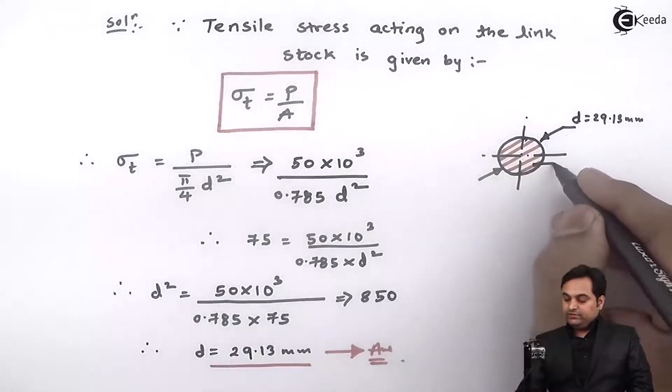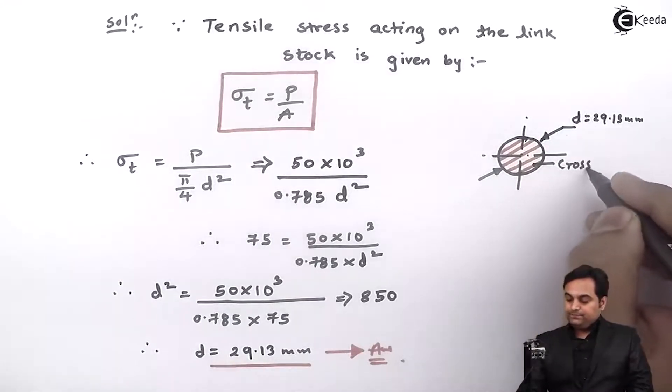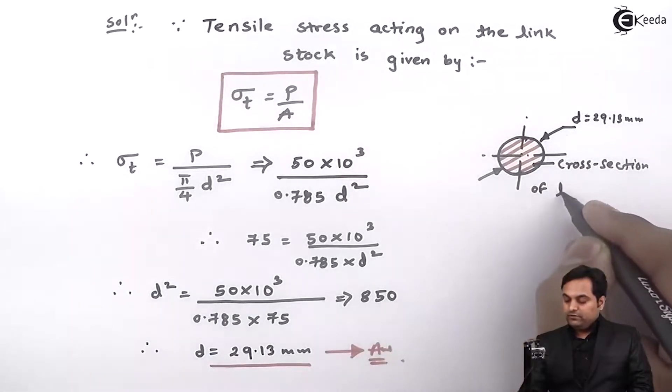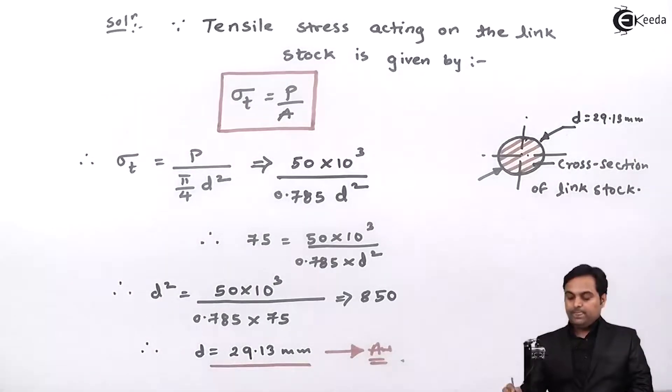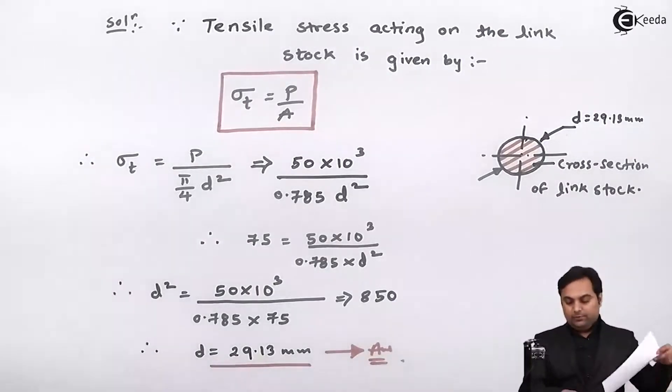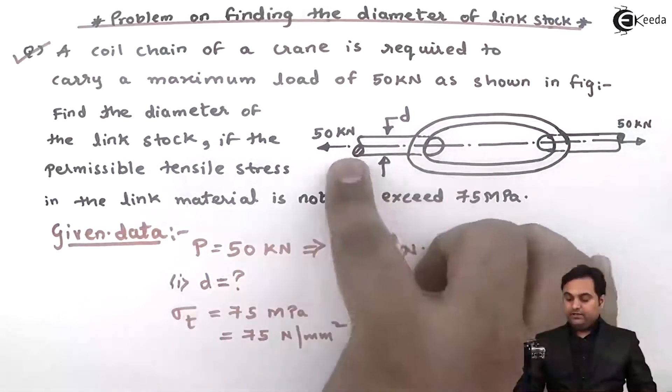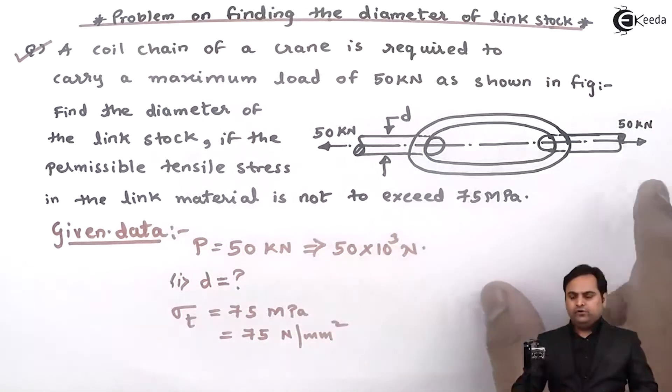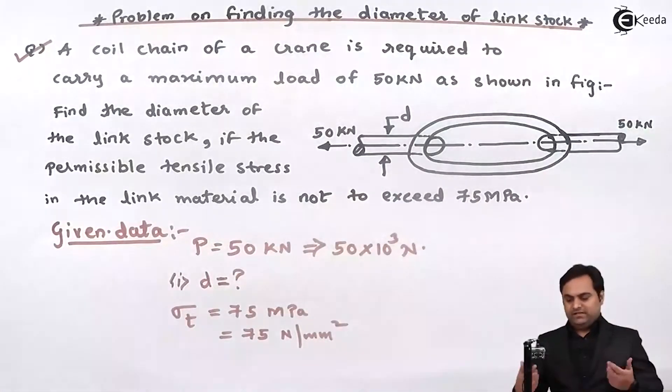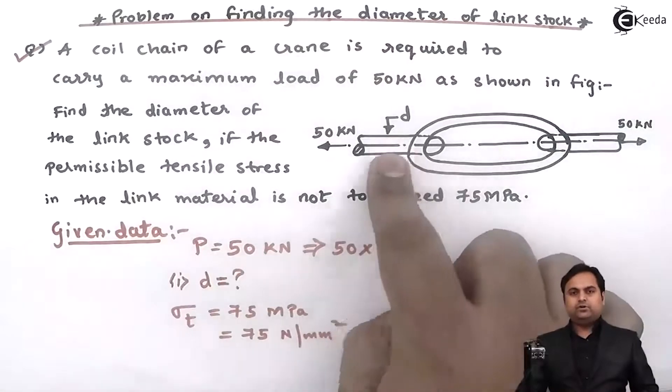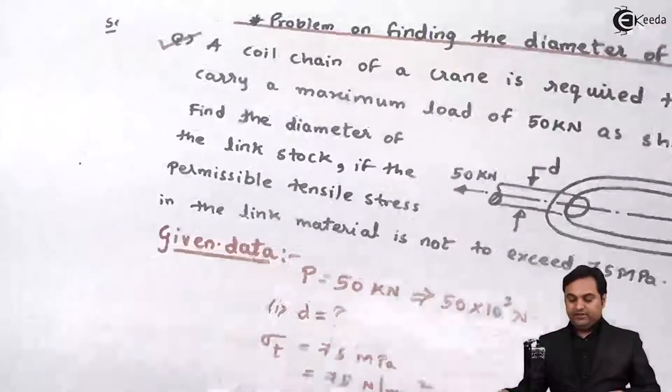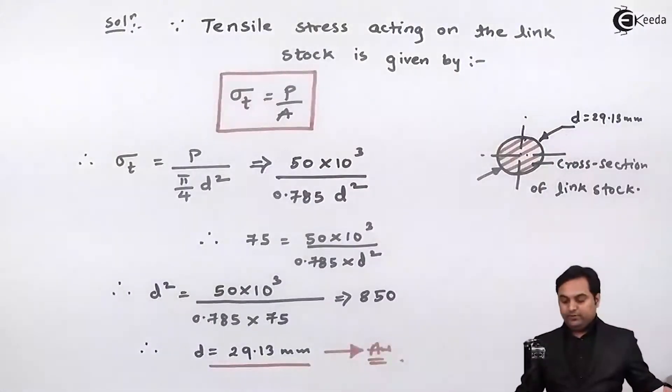So this is cross section of link stock. And here if we look into the problem, the question was when the load is applied of 50 kilonewton, and that load is tensile, then how much should be the diameter of this stock. And the diameter we have calculated, it is 29.13 mm, and with this we complete the question.